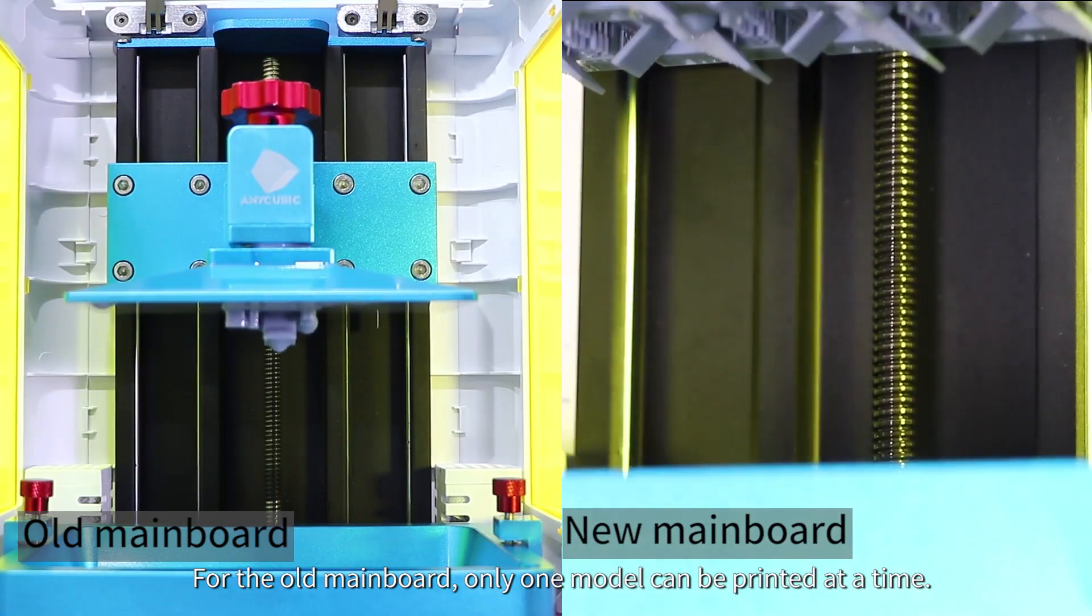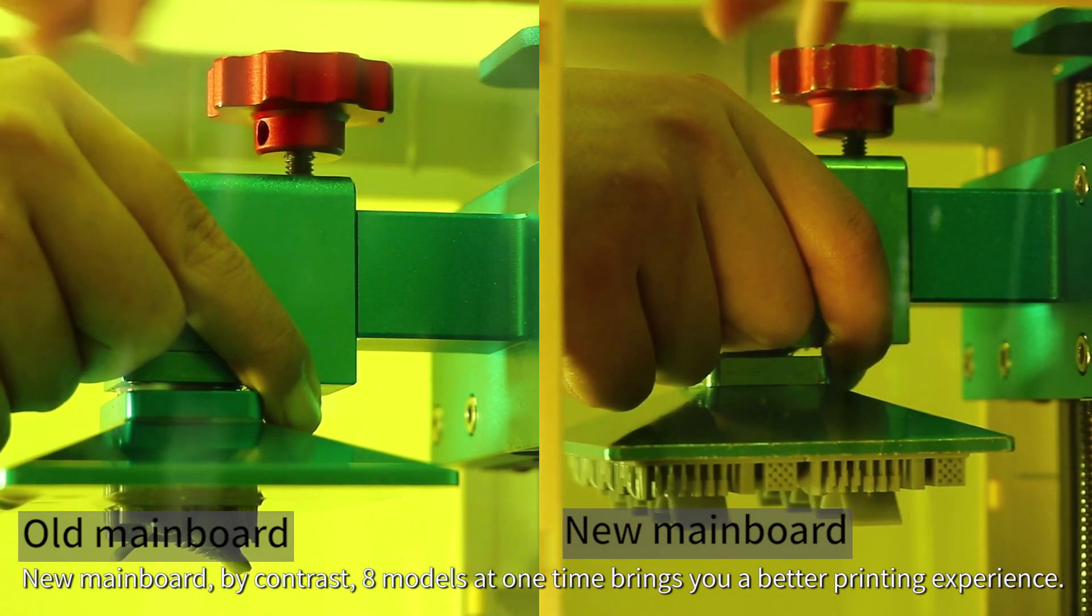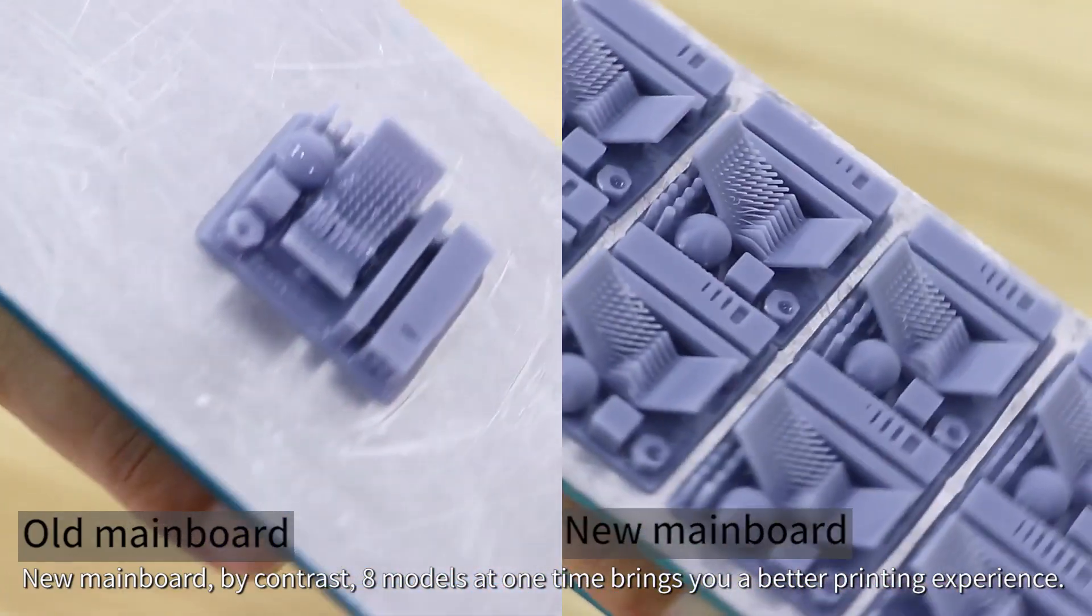For the old mainboard, only one model can be printed at a time. New mainboard by contrast, eight models at one time brings you a better printing experience.